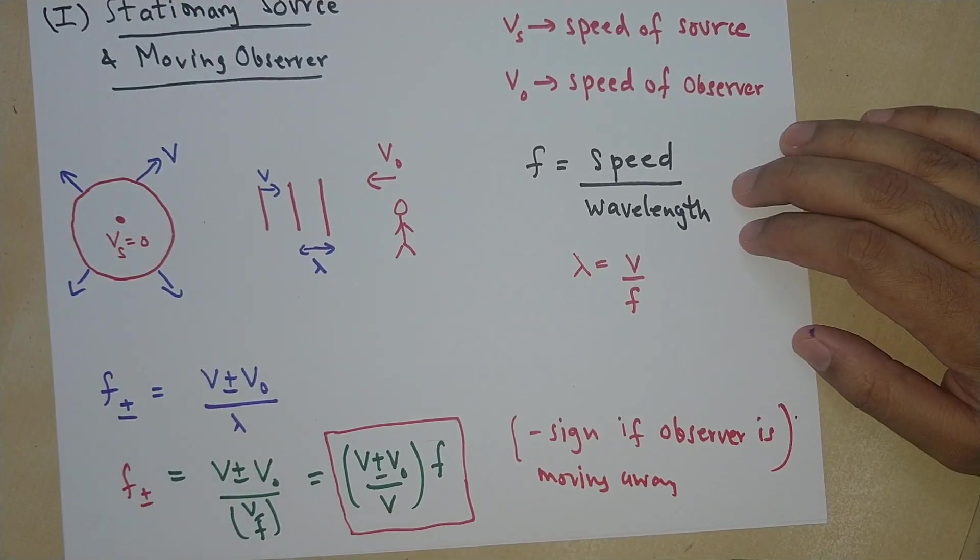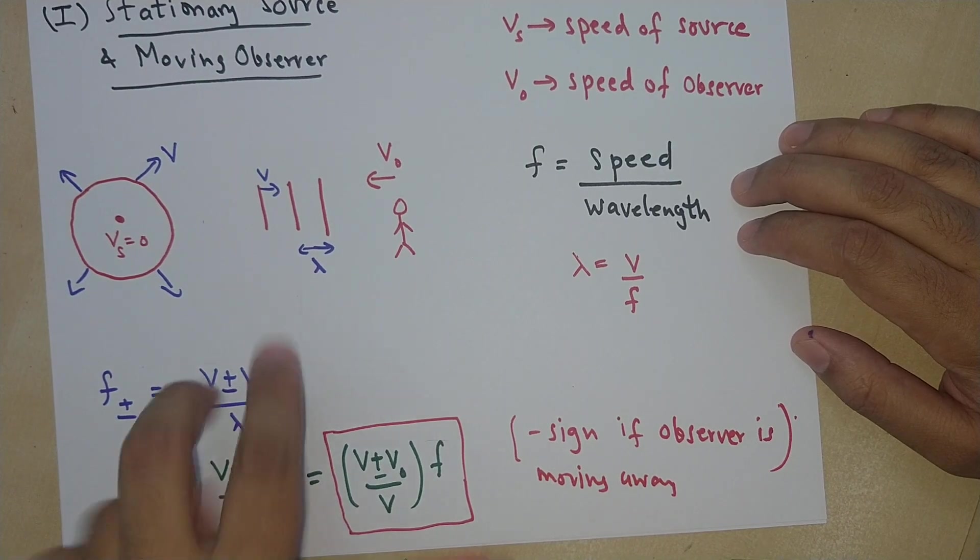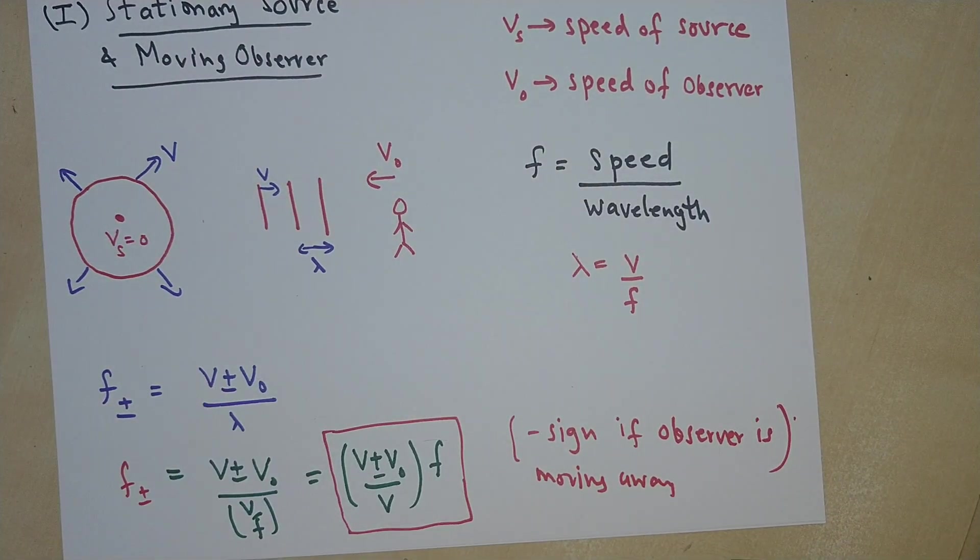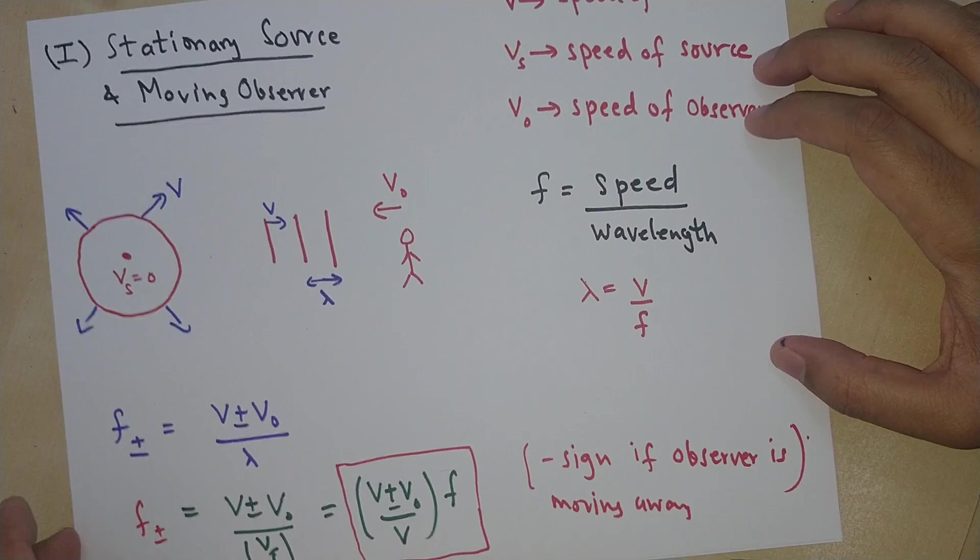So again, the main important thing that's going on over here is that the relative velocity is changing and due to that, the frequency that the observer listens to is changing. So this was the first case.